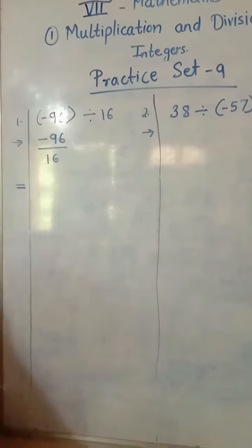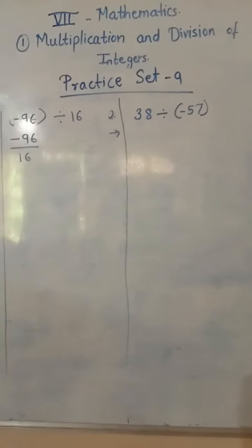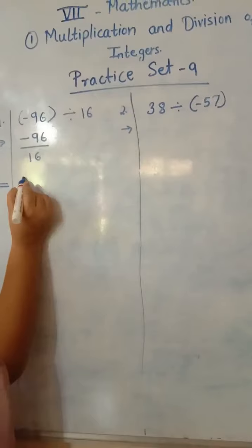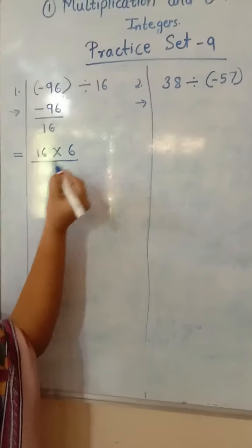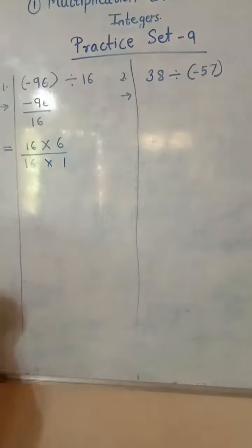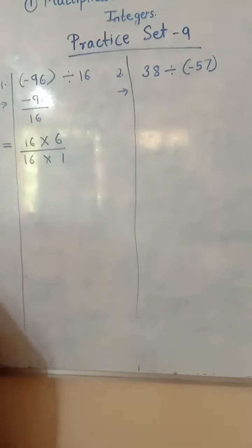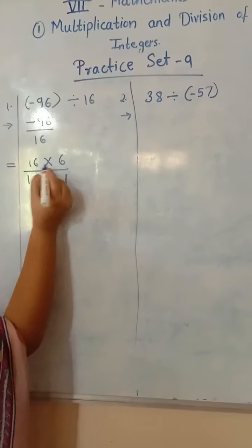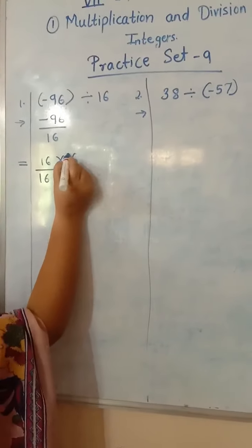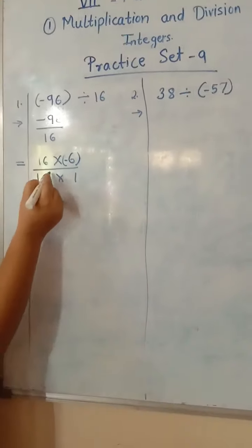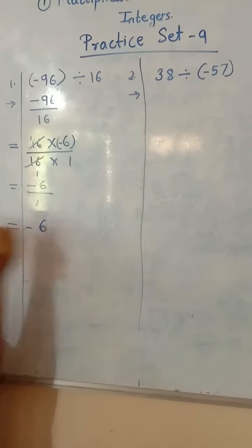Check whether both numbers appear in the same multiplication table. Both numbers are in the 16's table. First, don't look at the sign — just think: 16 times how much is 96? Very good, 16 sixes are 96. Here there is no issue with the sign for the denominator, but we need a negative sign in the numerator. So we give the negative sign to 6, because 16 and 16 will cancel. The answer is negative 6 upon 1, which equals negative 6.